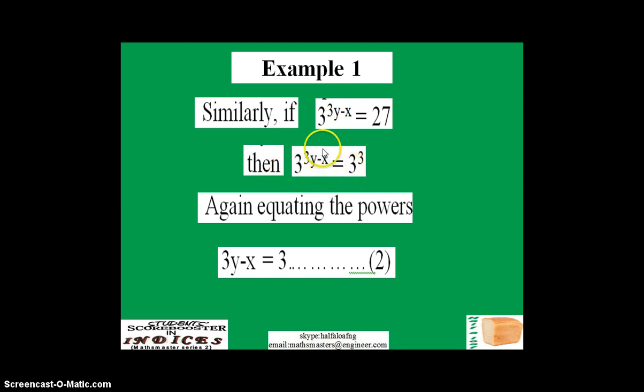Now that again we have equal bases—we have 3 here and we have 3 here—we can equate the exponent, the powers, thus: 3y minus x equals 3. This forms equation 2.